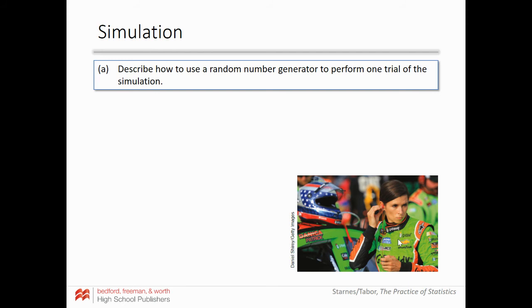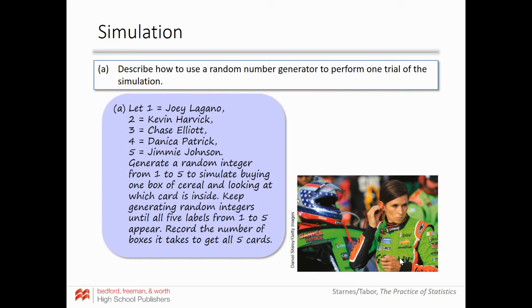To simulate, assign numbers to each driver: 1 = Joey, 2 = Kevin, 3 = Chase, 4 = Danica Patrick, 5 = Jimmie. Use a random number generator from one to five to simulate buying a box — whatever number comes up corresponds to the driver in that box. Keep generating integers until all five labels have appeared. You might get many repeats before seeing all five. Record how many boxes it takes to get all five cards — that's one trial.